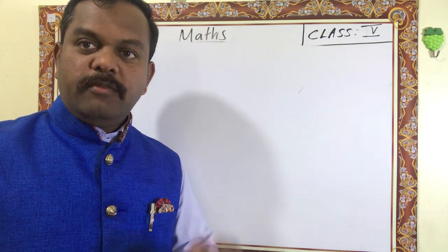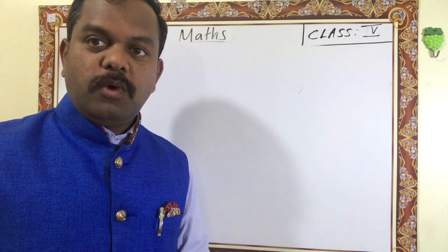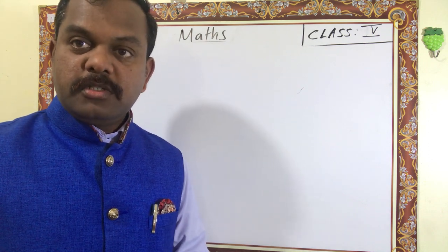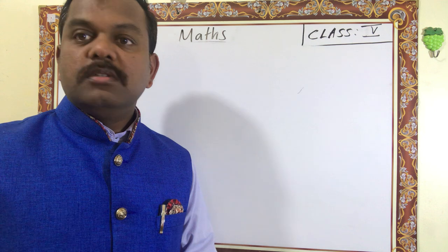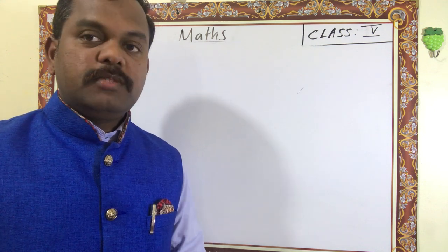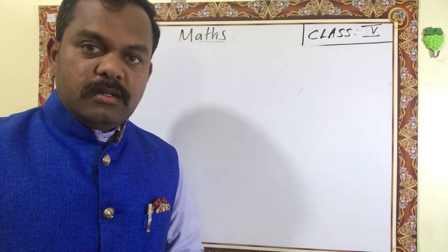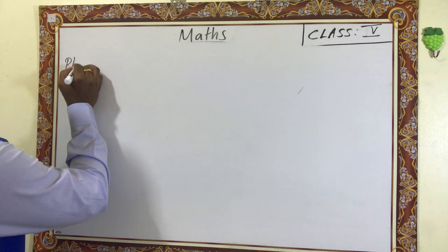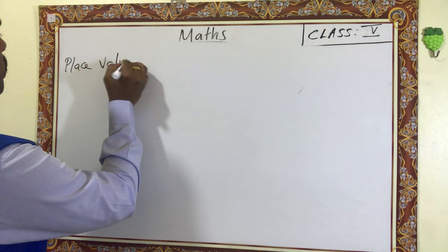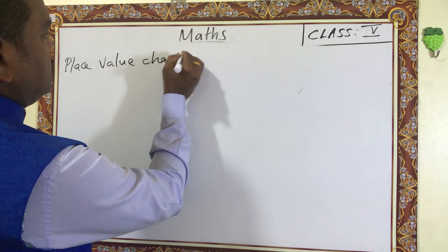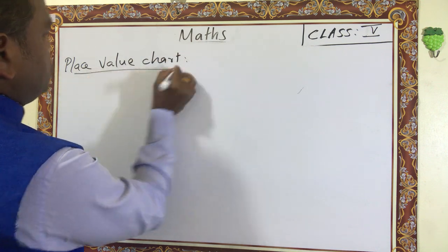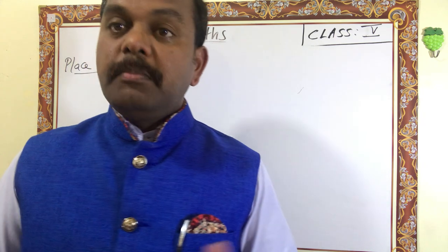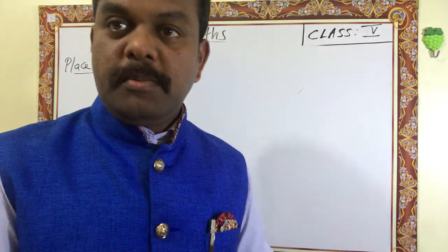Hello students, this is our second video of lesson one. In this video we are going to learn about the international place value system and rounding numbers, then Roman numerals. First we can see the place value chart. There are two types: one is the Indian place value chart and another one is the international place value chart.